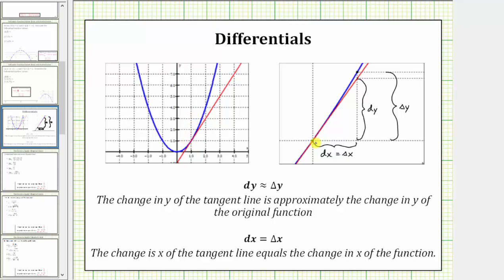If we zoom in on the point of tangency and use the red tangent line to approximate this function value, the idea is the change of y along the tangent line — given by differential y — is approximately equal to the change of y along the original function, delta y. We can say that differential y is approximately equal to delta y as long as we are near the point of tangency, which is why we can use a tangent line approximation to approximate function values.